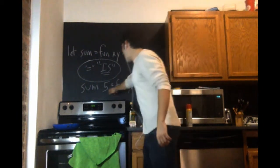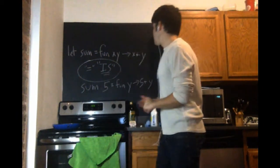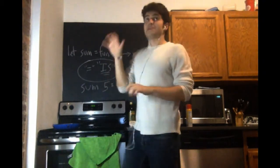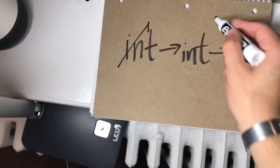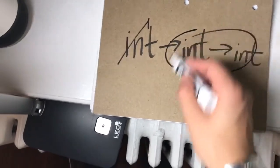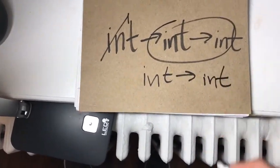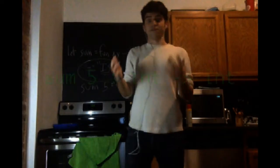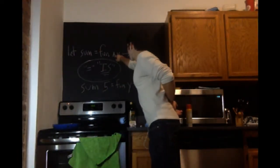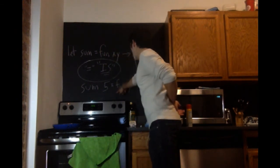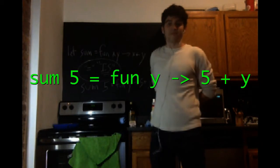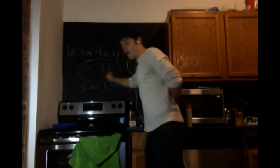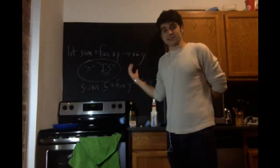Say that we pass just one argument to sum — sum 5. Well, sum is int to int to int. So if we pass in a first argument, we're left with something that is of type int to int. So sum 5 is a thing of type int to int. And the value of sum 5? We're filling in the first slot with 5, so what's left is just a function that takes one argument and adds 5 to it. Sum 5 also has a value and a type.